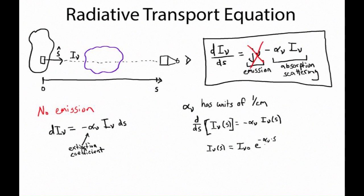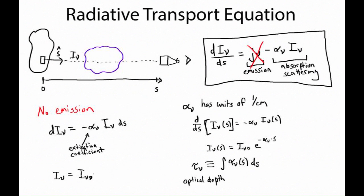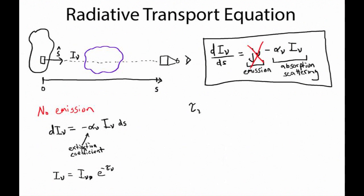It's useful to examine that exponent in more detail. We define a variable tau-sub-nu — the optical depth — to be the more general form of that exponent: the integral of the extinction coefficient, which in general could be a function of s, over the path s. In the no-emission case, the solution to the radiative transport equation is that I-sub-nu falls off from its initial value exponentially as a function of optical depth. If the optical depth tau-sub-nu equals 1, the intensity has been attenuated by a factor of 1/e, which is about 37% of its original value.